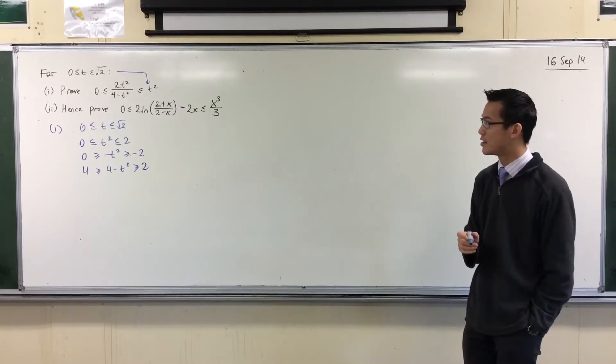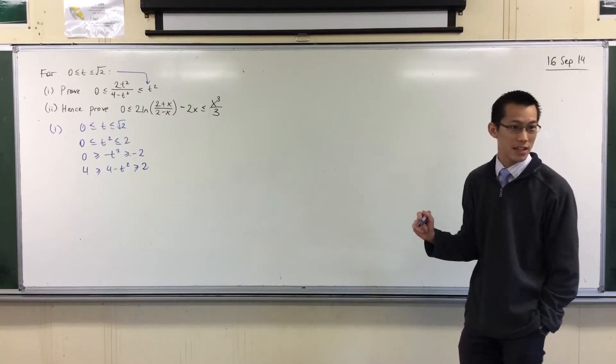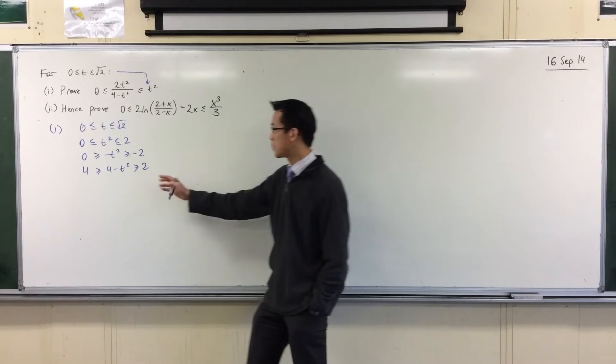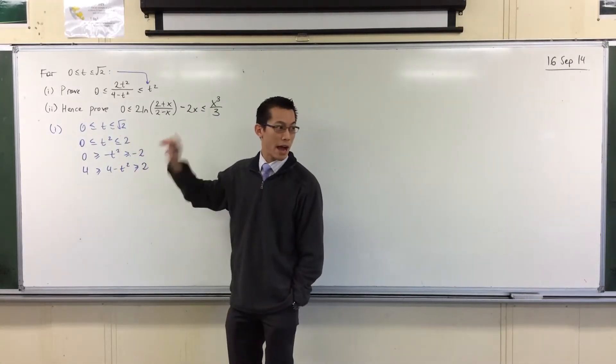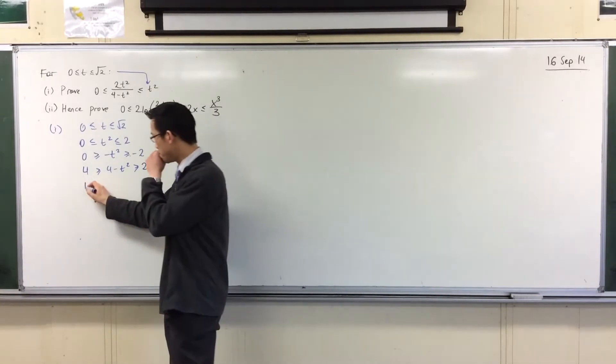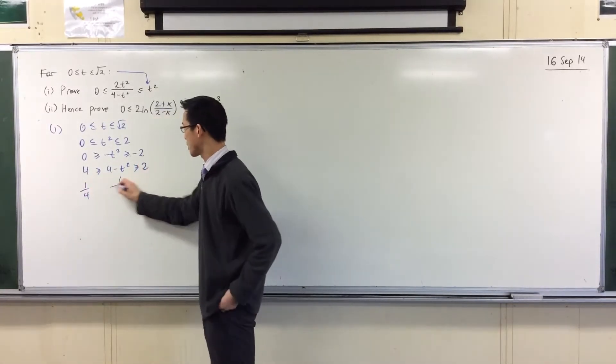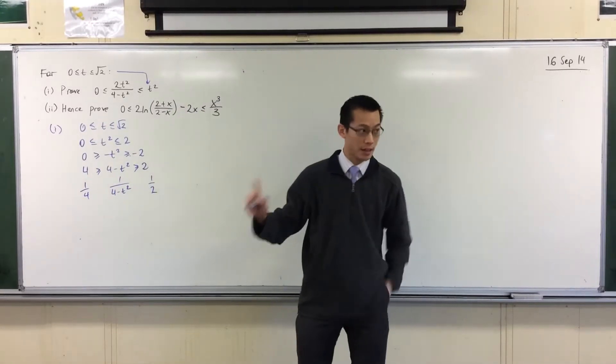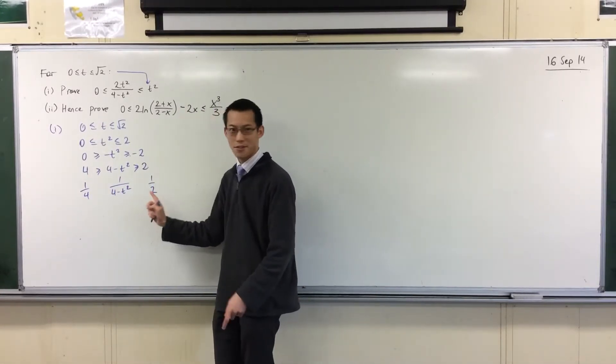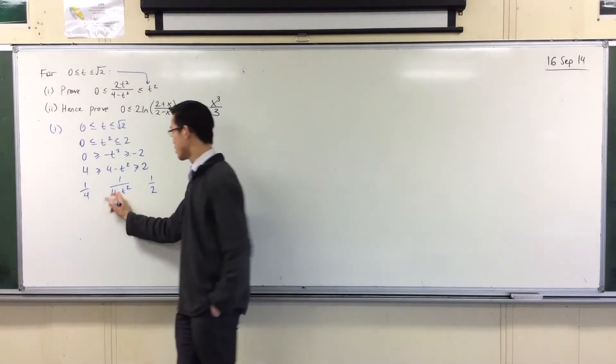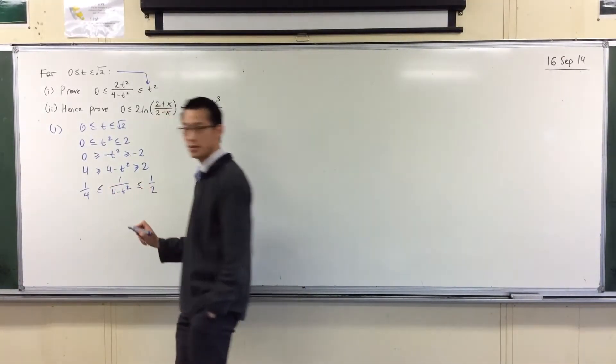Because remember, I flipped all the inequalities backwards, right? Well, I can flip them back the right way if I take reciprocals of everything, right? If this becomes a quarter, this becomes one over four minus t squared, and this becomes a half. Clearly, you can see now I've gone the other way around. Look, my big numbers are over here and my smaller numbers are over here, right? So this is now the direction of my inequalities.